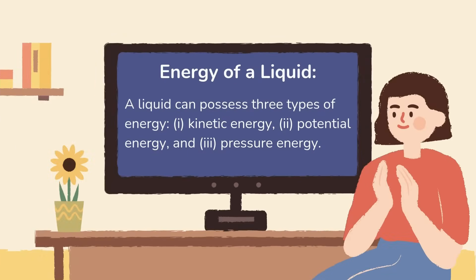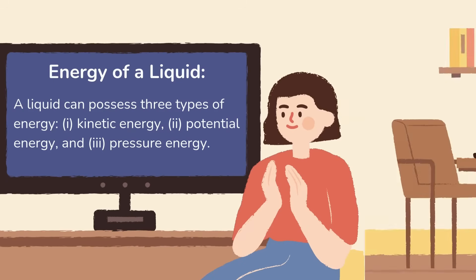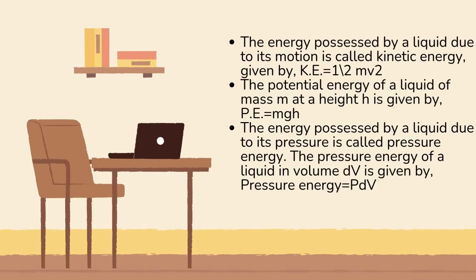Next up is energy of a liquid. A liquid can possess three types of energy: 1) kinetic energy, 2) potential energy, and 3) pressure energy. The energy possessed by a liquid due to its motion is called kinetic energy, given by KE = ½mv². The potential energy of a liquid of mass m at a height h is given by PE = mgh. The energy possessed by a liquid due to its pressure is called pressure energy. The pressure energy of a liquid in volume dV is given by pressure energy = p·dV.